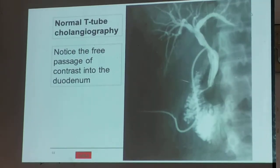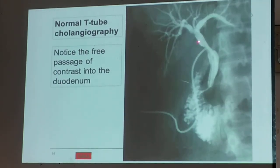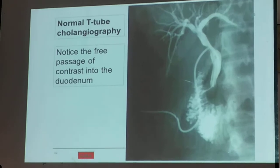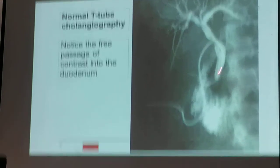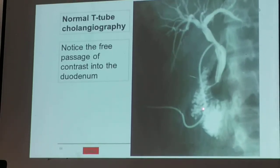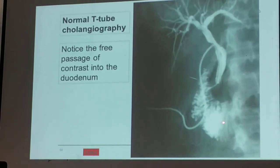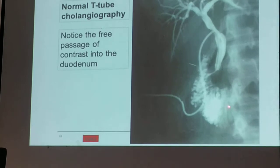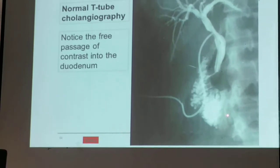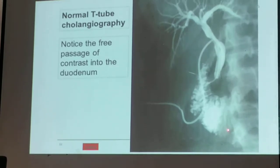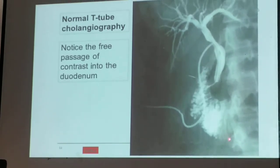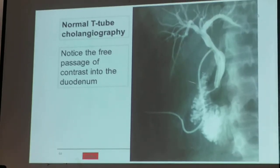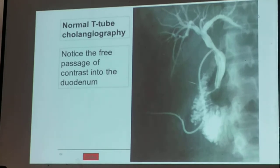This is the typical T-tube cholangiogram. As I've said, there should be reflux of contrast material to the duodenum. Once you see this reflux into the duodenum, the examination is complete.